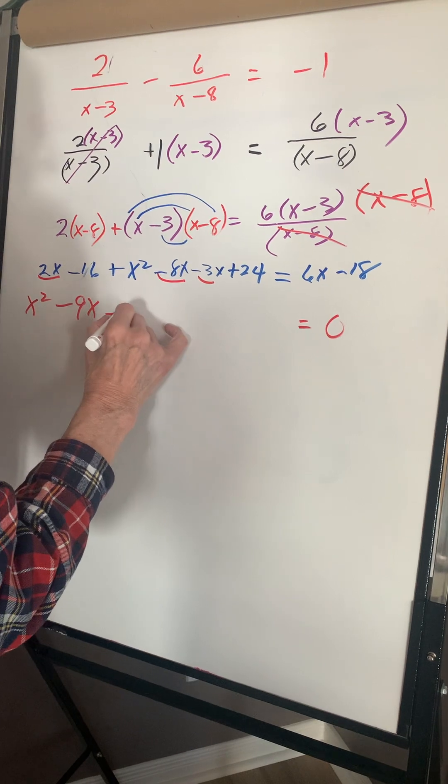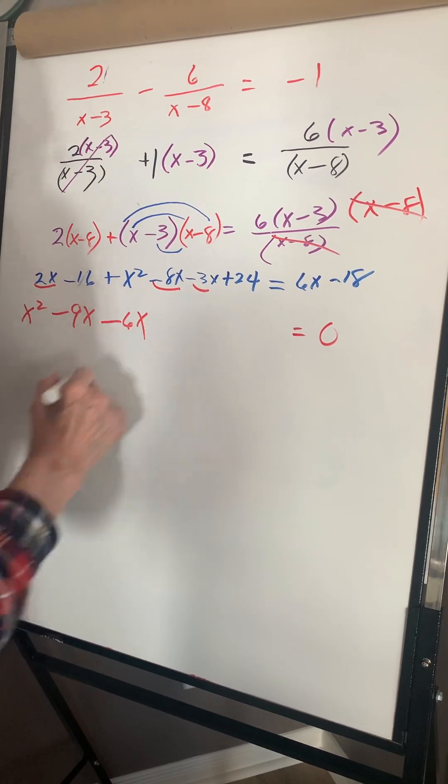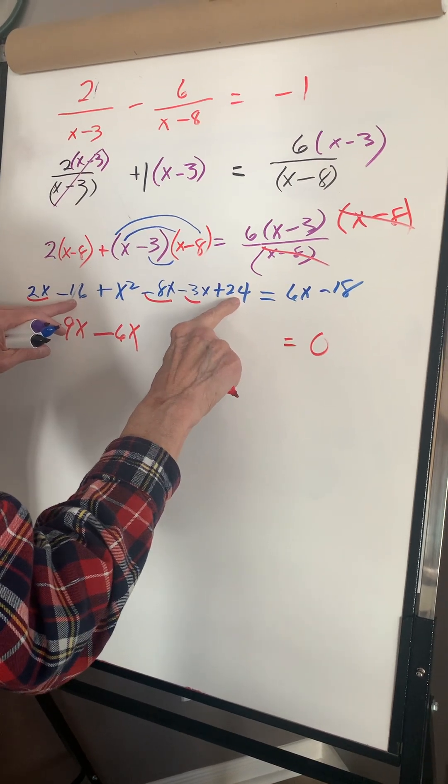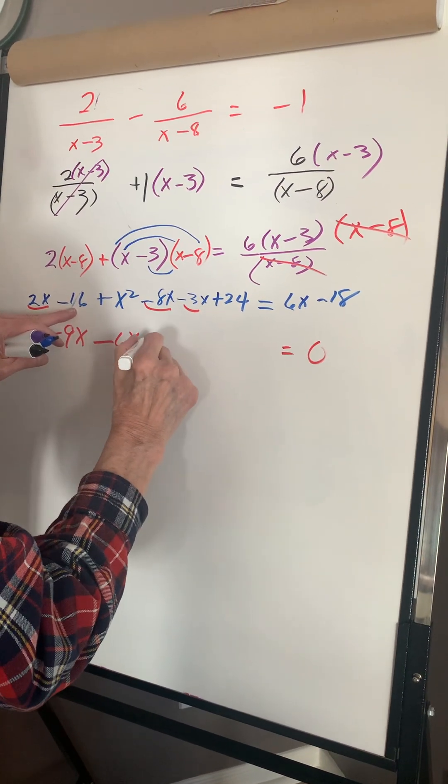This, when we move it over, becomes minus 6x. And we have this over here, which is going to be positive and negative, plus 8.